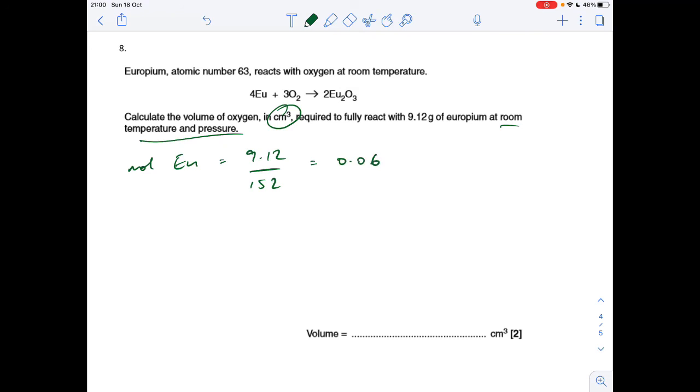The moles of oxygen that is needed for a full reaction is 3 over 4 times those 0.06, so that's 0.045 moles. Therefore the volume at RTP is going to be 0.045 times 24,000 again for cm cubed, so it's 1080.